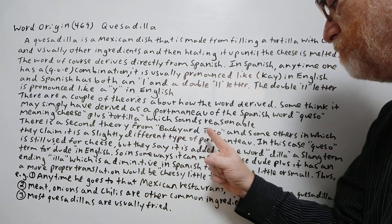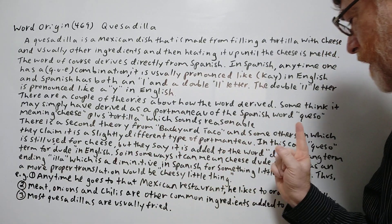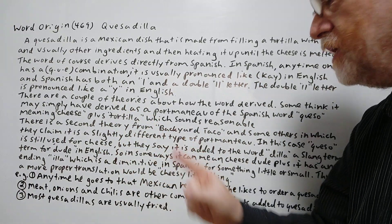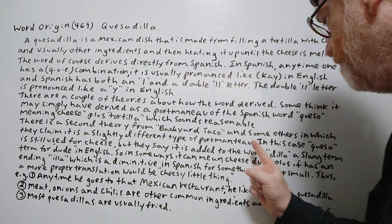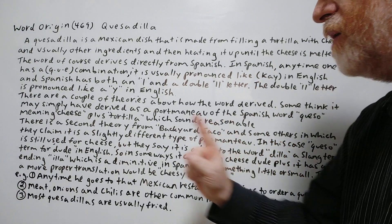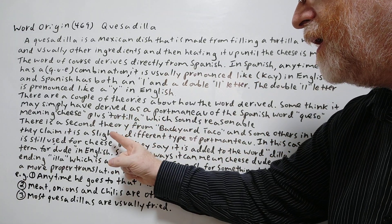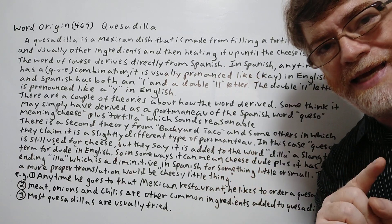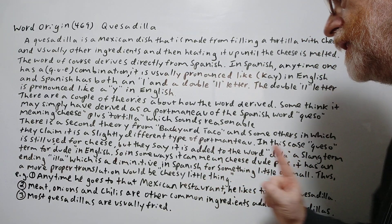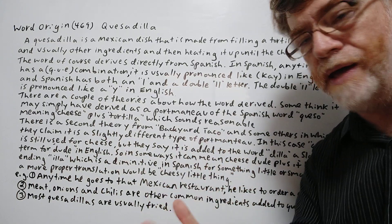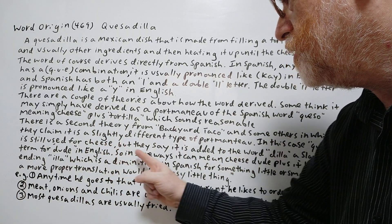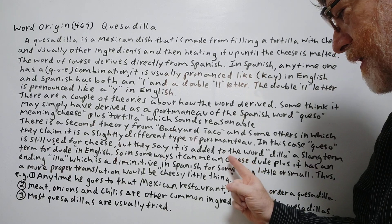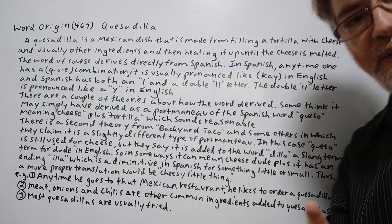There is a second theory from Backyard Taco and some others, in which they claim it is a slightly different type of portmanteau. In this case, queso is still used for cheese, but they say it is added to the word dia, a slang term for a dude or a man in English. So in some ways it can mean cheese dude.